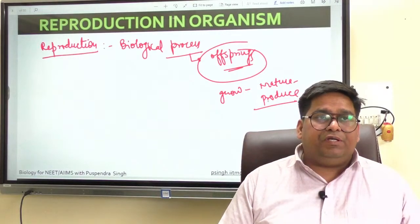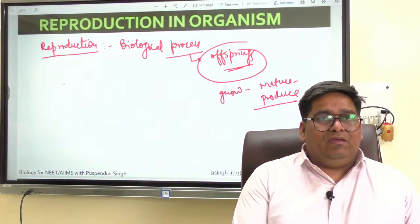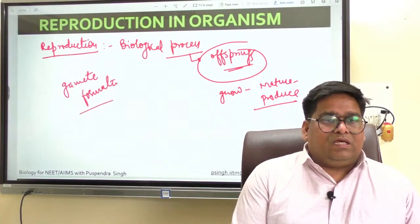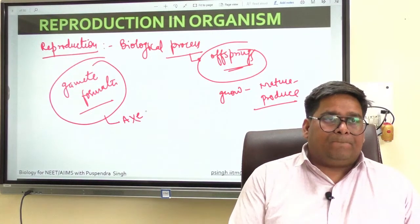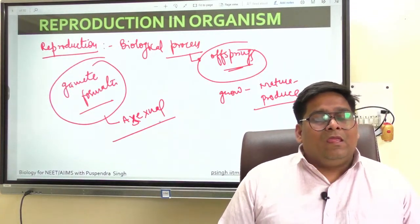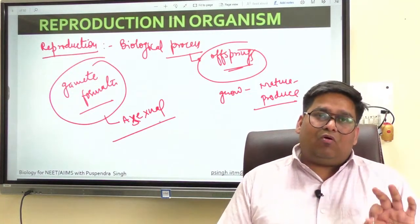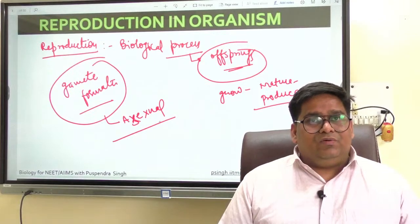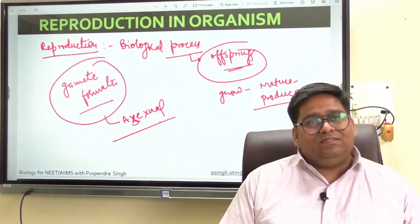When such offsprings are produced by a single parent, with or without the involvement of gamete formation, the reproduction we call as asexual. What is this gamete? Gamete is nothing but a specialized reproductive cell that is involved in the sexual reproduction.